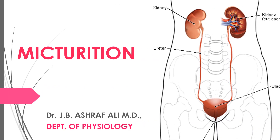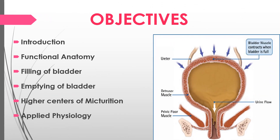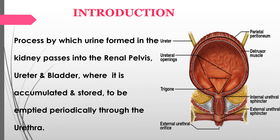Hi everyone, today let us discuss about micturition under the following headings: introduction, functional anatomy of the bladder, filling of the bladder, emptying of the bladder, higher centers of micturition, and applied physiology. Micturition is the process by which urine formed in the kidney passes into the renal pelvis, ureter, and then the bladder where it is accumulated and stored, and has to be emptied periodically.